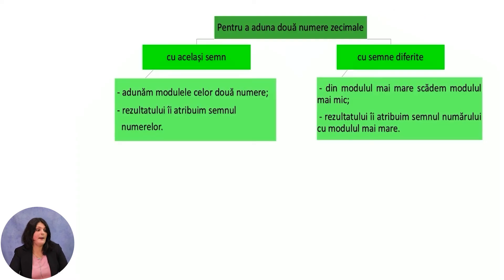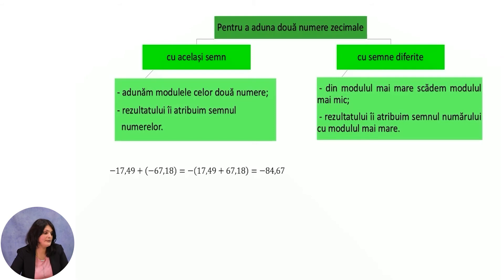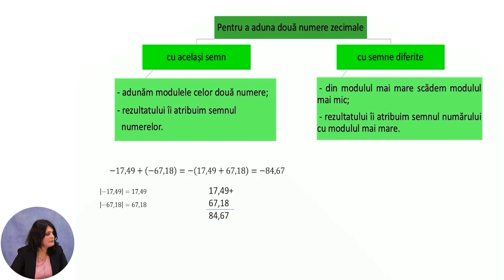Let's generalize. To add two decimal numbers with the same sign, we add the absolute values of the two numbers and assign the sign of the numbers to the result. For example, minus 17.49 plus minus 67.18: since the numbers have the same sign, we add their absolute values and keep the sign. When adding, we write integer part under integer part, comma under comma, decimal part under decimal part. The result is 84.67.